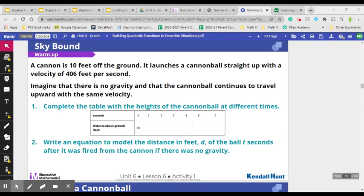We are now starting part two of describing situations with quadratics. In this case, we have a cannon that is 10 feet off the ground, launching a cannonball straight up with a velocity of 406 feet per second.